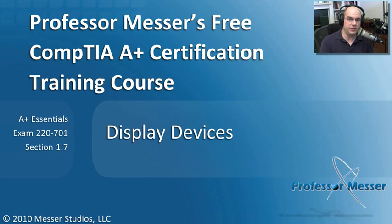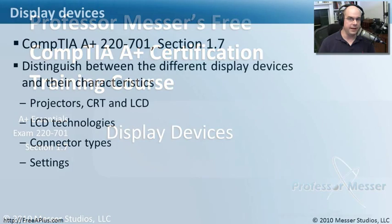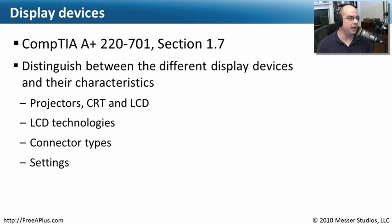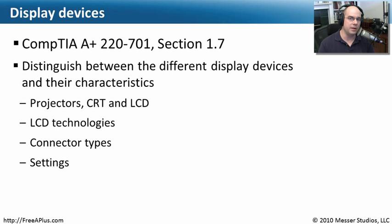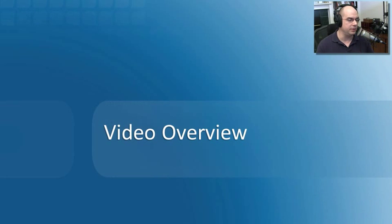Welcome to this module of Professor Messer's Free CompTIA A-Plus Certification Training Course on Display Devices. I'm James Messer. In this module, we're going to go through the requirements of your 220-701 Essentials Exam, Section 1.7, where we need to distinguish between the different display devices and their characteristics. We're going to look at projectors, LCD monitors, connector types and settings — everything you need to know to understand how your monitors work and how you can plug them into your computers.